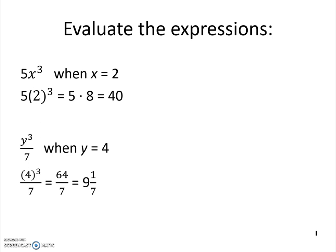Looking at the next example, we have y cubed divided by 7 when y is equal to 4. Plugging it in for y, we get 4 cubed divided by 7. 4 times 4 times 4 is 64 over 7. That's an improper fraction, so we write it as a mixed number, which is 9 and 1 seventh.